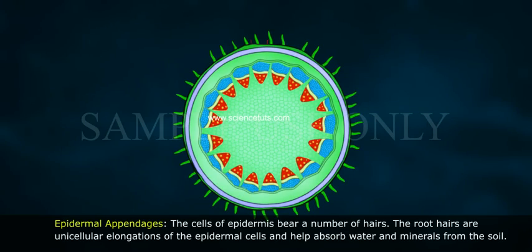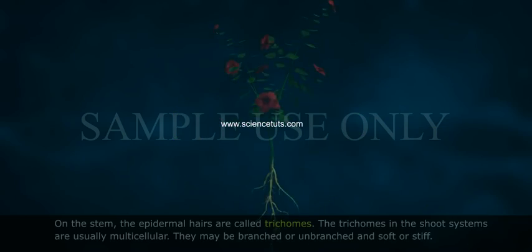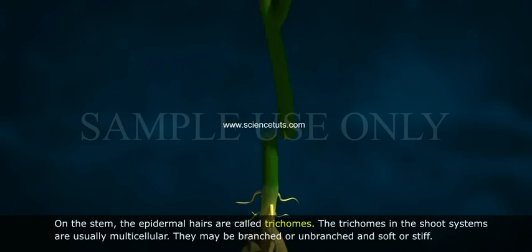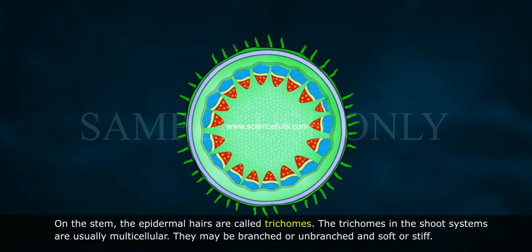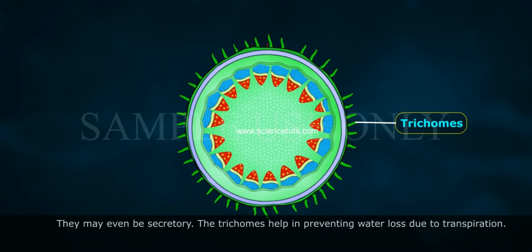Epidermal Appendages: The cells of epidermis bear a number of hairs. The root hairs are unicellular elongations of the epidermal cells and help absorb water and minerals from the soil. On the stem, the epidermal hairs are called trichomes. Trichomes in the shoot system are usually multicellular. They may be branched or unbranched and soft or stiff, and may even be secretory. The trichomes help in preventing water loss due to transpiration.